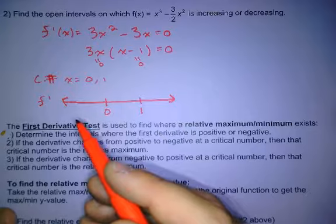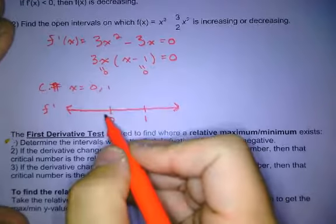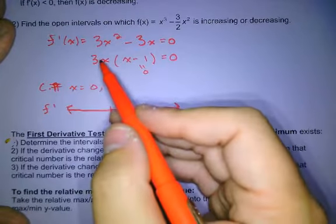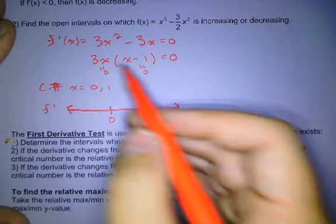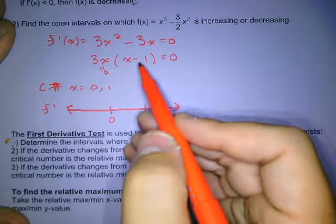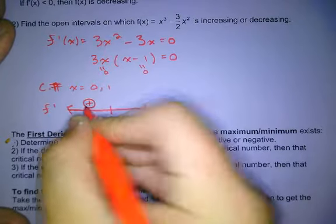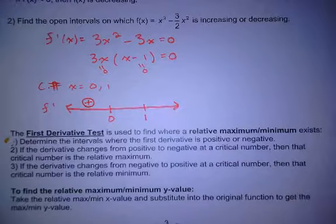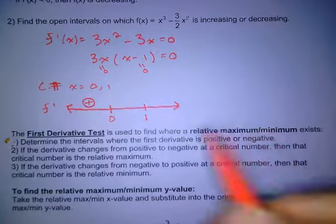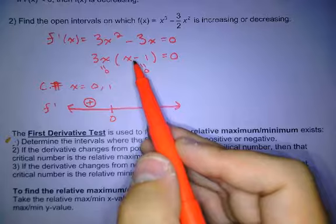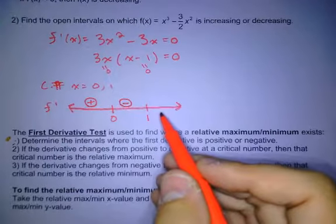So if I plug in a number that's less than zero, come back up to here, it's usually easier to plug in the factored form. What's a number that's less than zero? Negative one. Plug in negative one. And you're going to get negative, negative. Which is? So you're going to get a negative times a negative, which is a positive. Plug in a number that is between zero and one. One half. You're going to get positive times a negative, which is a negative. Plug in a number bigger than one. Two. Positive, positive. So this is going to be positive.